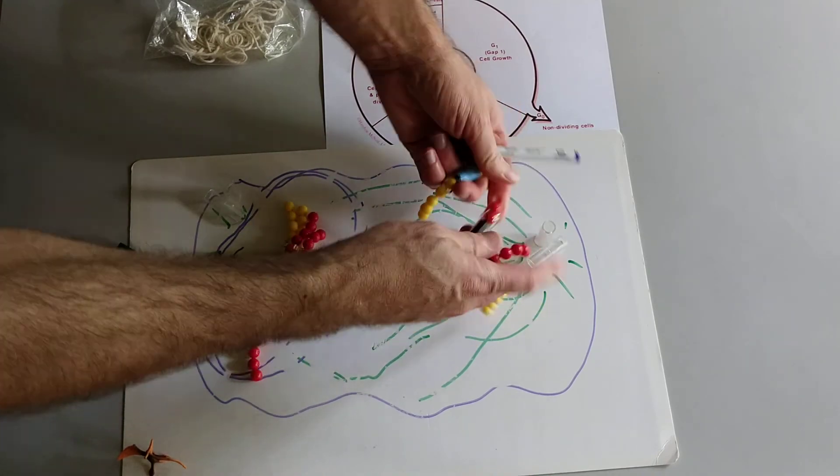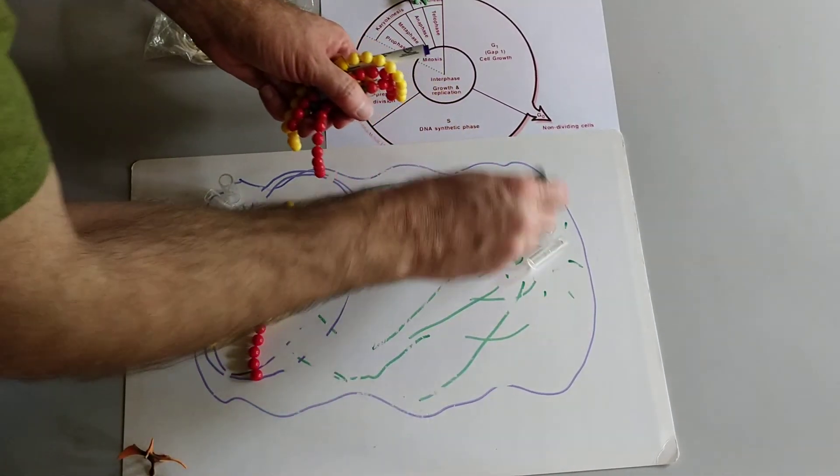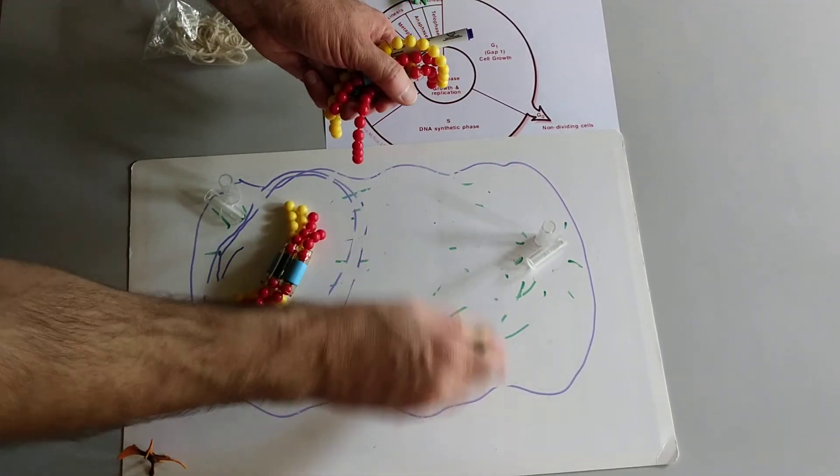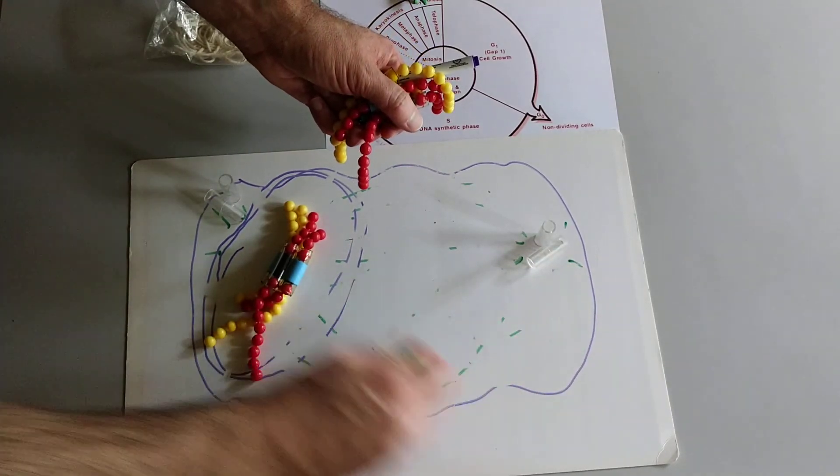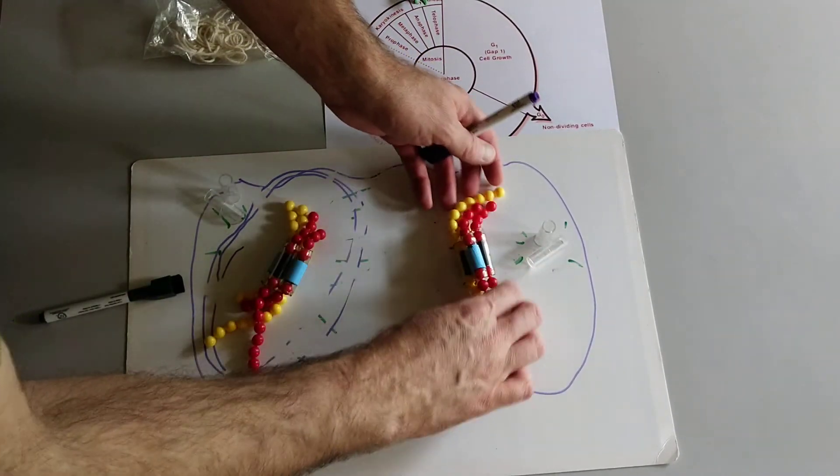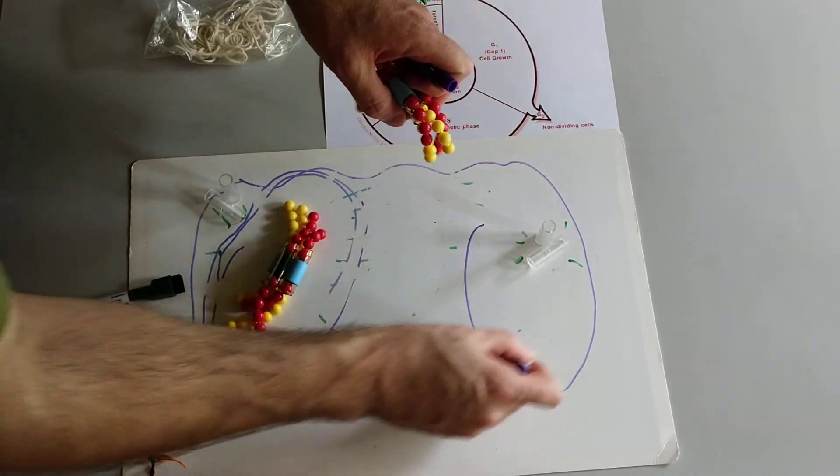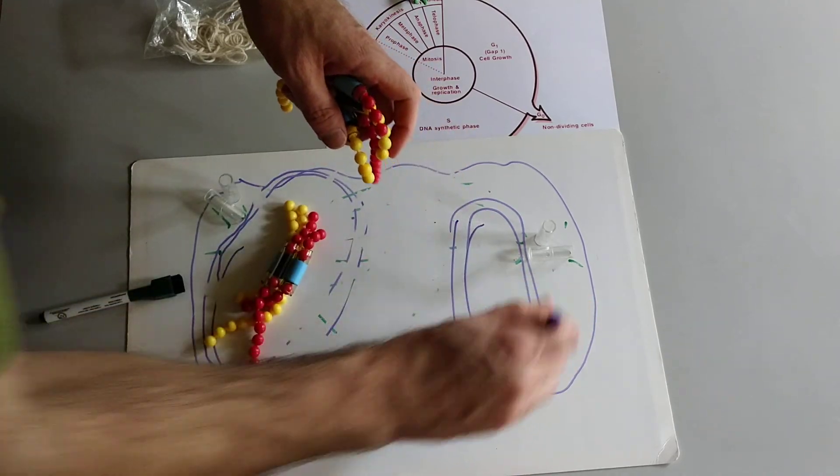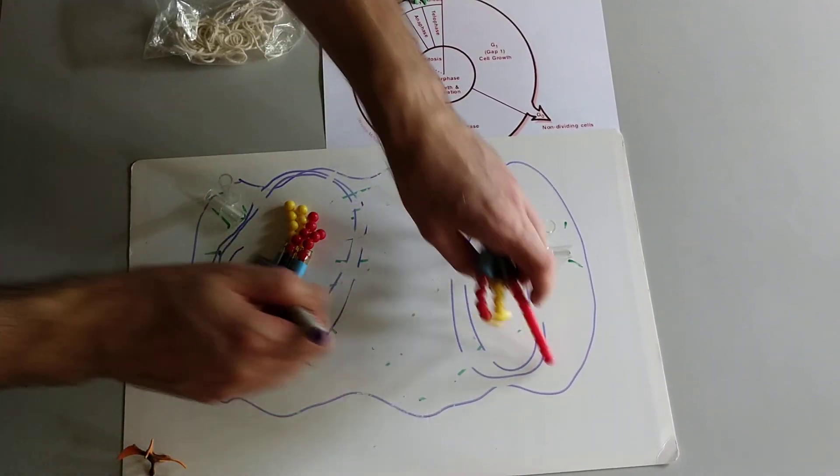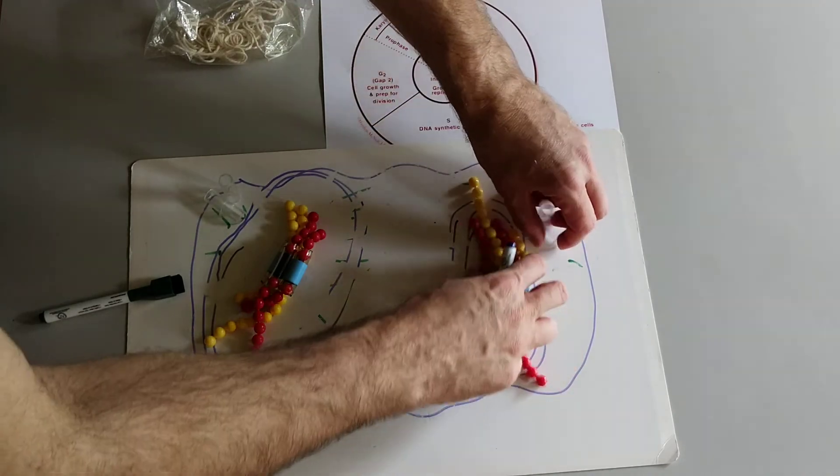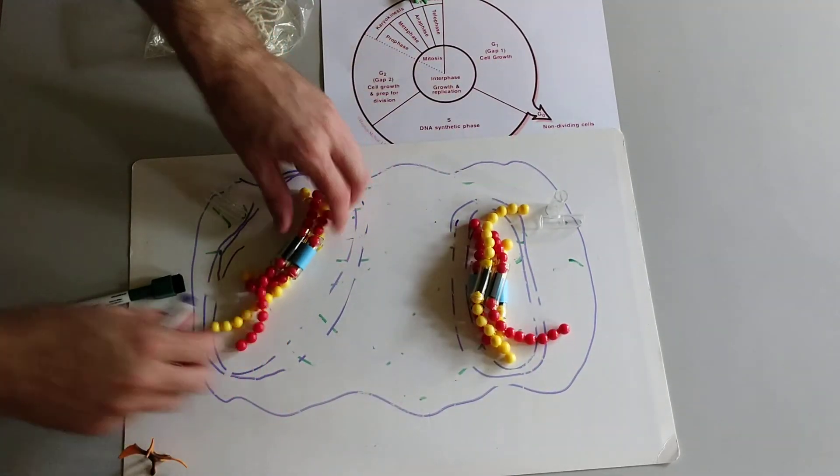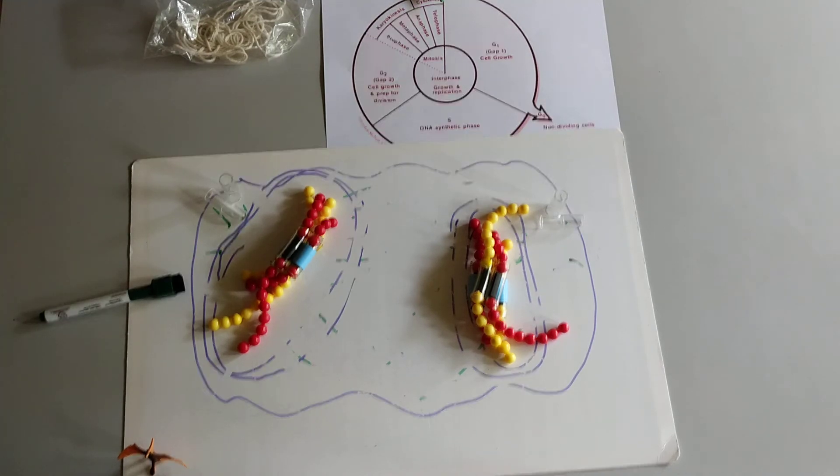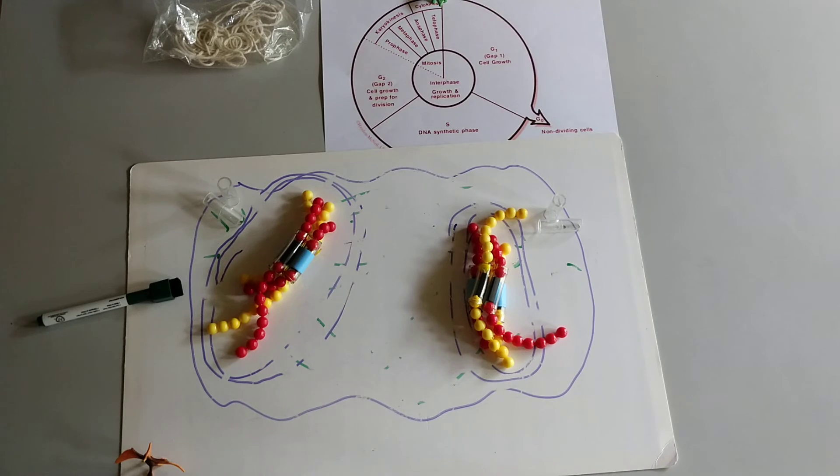And do the same thing over here. And we'll draw the nuclear membrane kind of like that. Get some pores in there. Get our chromosomes inside of that. All right. So that is the end of mitosis. So that is the division of the nucleus.